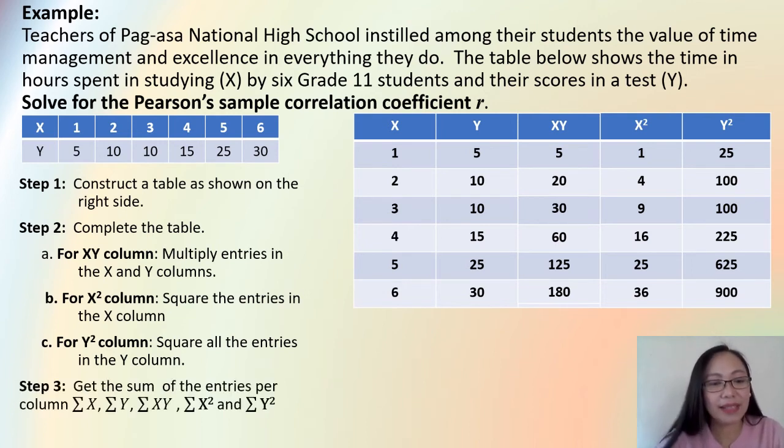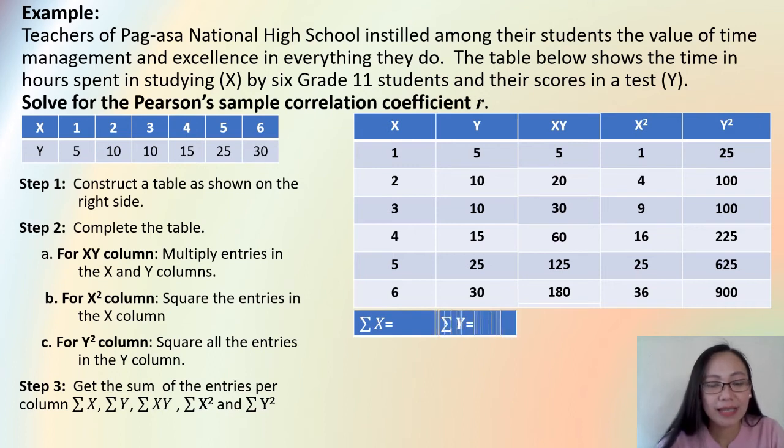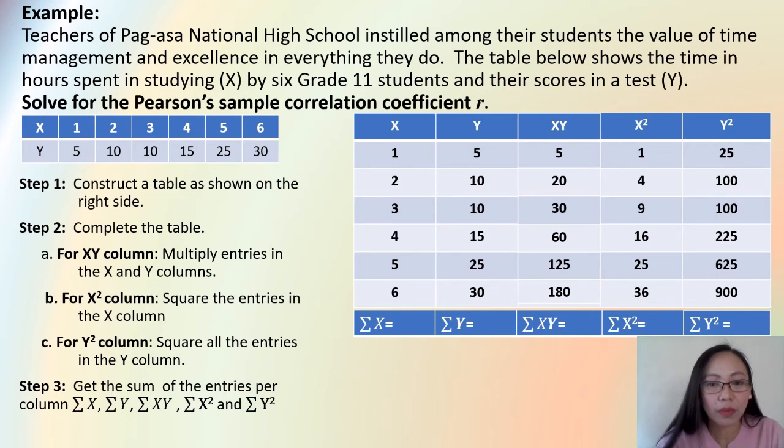And then for step 3, we get the sum, which is the summation, that we have a while ago. We get the sum of the entries per column. So, we have there the summation of X, summation of Y, summation of XY, summation of X squared, and summation of Y squared. So, we add 1 plus 2 plus 3 plus 4 plus 5 plus 6. That gives you 21. And then for the next column, you have 5 plus 10 plus 10 plus 15 plus 25 plus 30. You have 95.